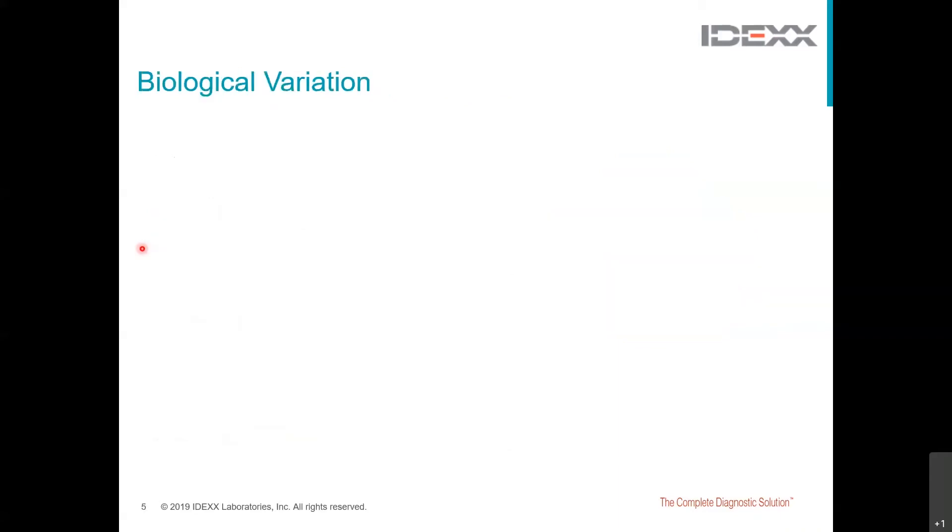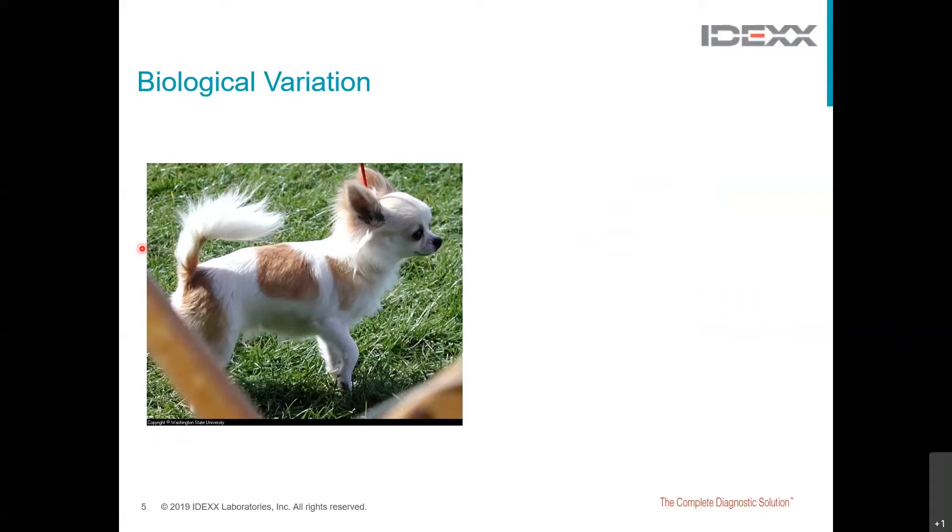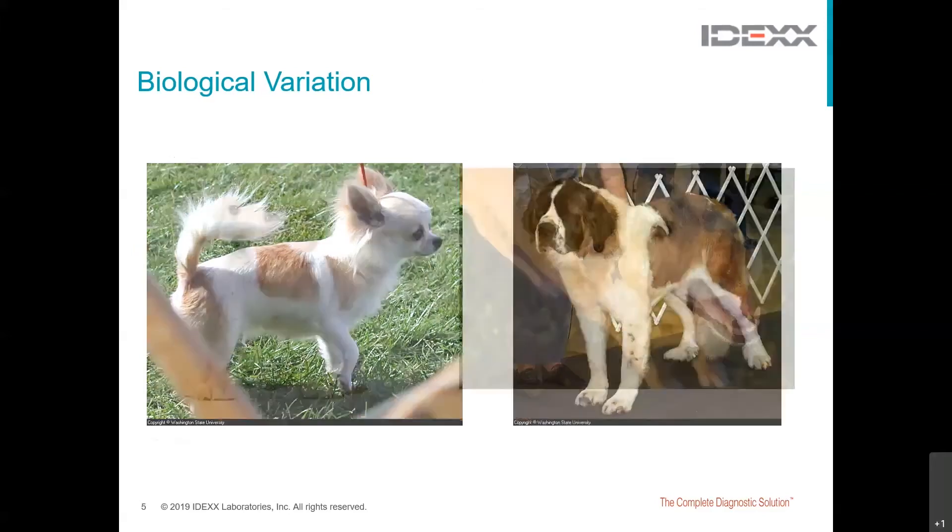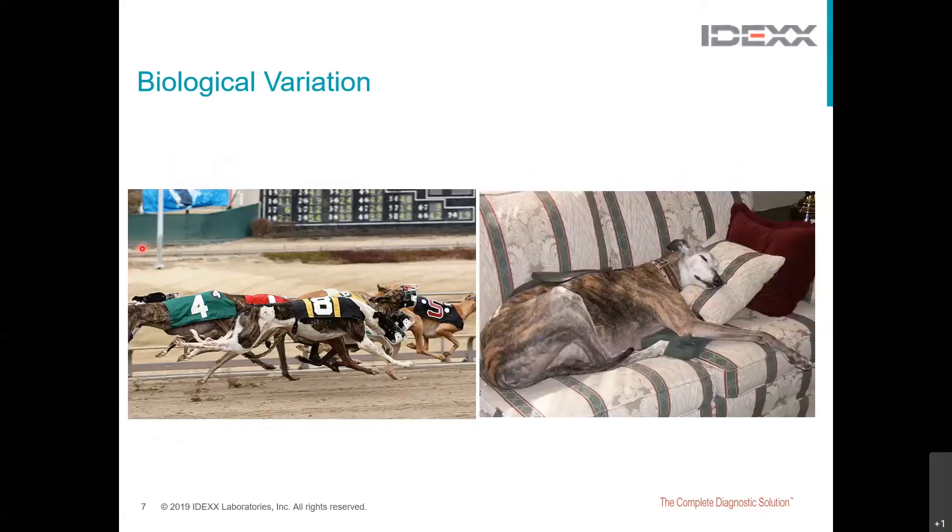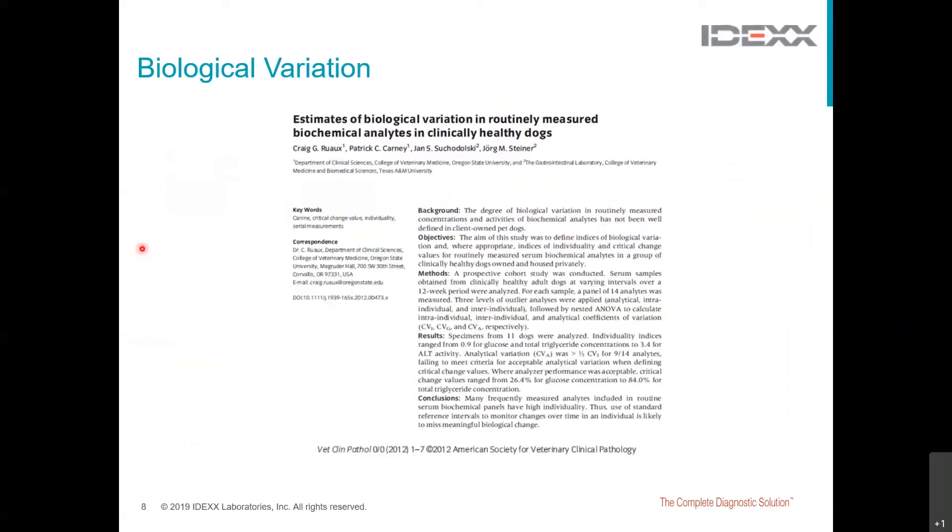If we think about it, we are asking, particularly for dogs, our population-based reference intervals to cover a lot of differences with regards to breed, sex, age, and then of course, physiologic status. And these can all play significantly in how we're going to end up interpreting our patient data. Biological variation is the random fluctuation of the laboratory results for an individual measurement around a homeostatic set point. And this can potentially be as much as 15 or 20% within a week or so.